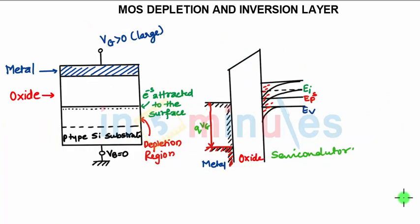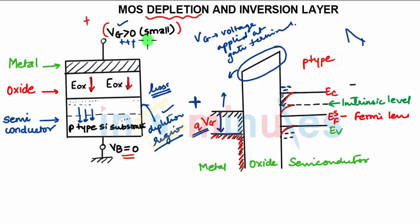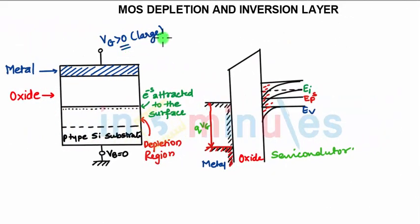In the previous case, the value of Vg was small. Now if we increase the gate voltage, for a very large value of Vg, a large number of electrons will be attracted at the boundary.